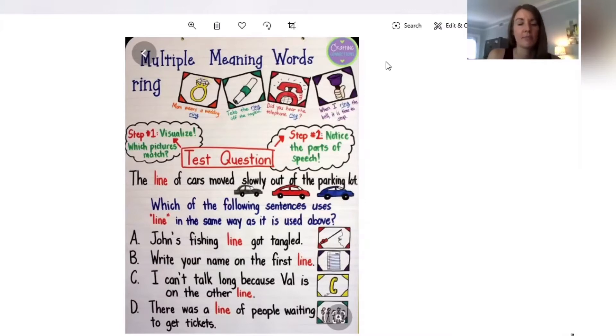So in order to figure out multiple meaning words, you're going to need to do a couple strategies. You're going to need to visualize and figure out which picture in your head is the same when you're using it in context. You're going to have to look at the clues in the sentence to help you.